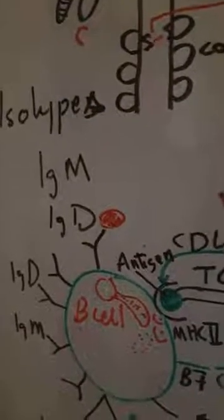These are the constant areas of the heavy chain. Now I am going to talk about the antibody classes, also known as immunoglobulin classes or antibody isotypes. There are five antibody isotypes: IgM, IgD, IgA, IgE, and IgG.